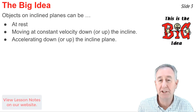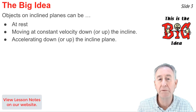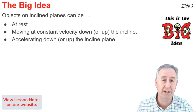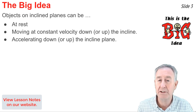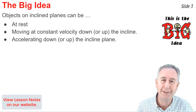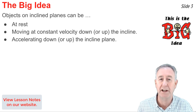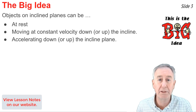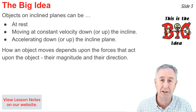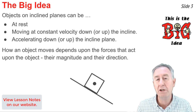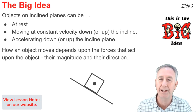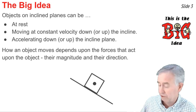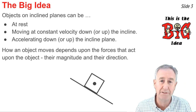Objects on inclined planes can be at rest, or they can be moving with a constant velocity down the incline, or they could be accelerating down the incline. Objects can even be moving at constant velocity or accelerating up the inclined plane if there's a force in that direction. The exact manner in which an object moves is dependent upon the forces that act upon the object, their relative magnitude and their direction. We'll be discussing the forces acting upon objects on inclined planes, and as we discuss each one, we'll put an arrow in this diagram to indicate the direction of that force.